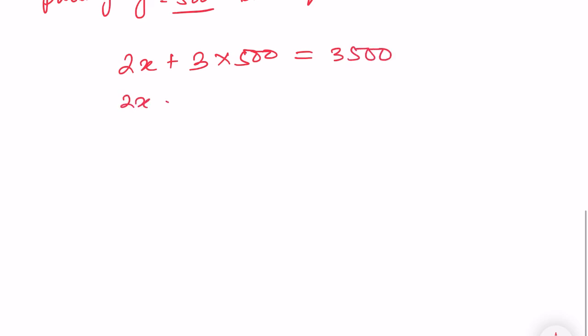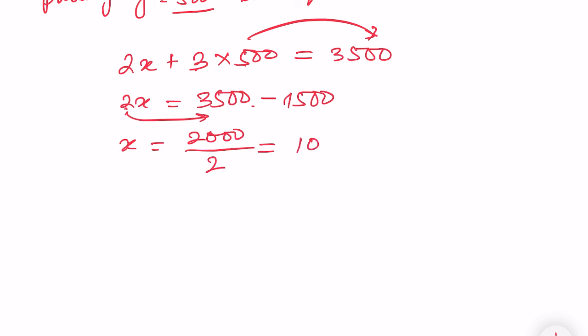So 2x equals 3500 minus 1500, which is 2000. x will equal 2000 divided by 2, which is 1000. So I got x as 1000.